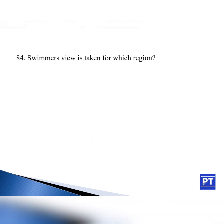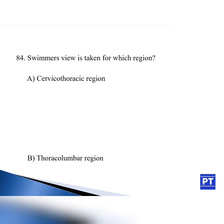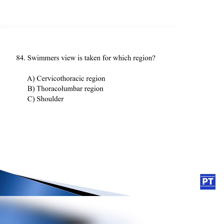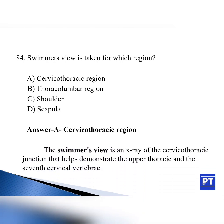Question number 84: Swimmer's view is taken for which region? Option A: cervicothoracic region, option B: thoracolumbar region, option C: shoulder, option D: scapula. The answer is option A, cervicothoracic region. The Swimmer's view is an X-ray of the cervicothoracic junction that helps visualize the upper thoracic and the 7th cervical vertebrae.